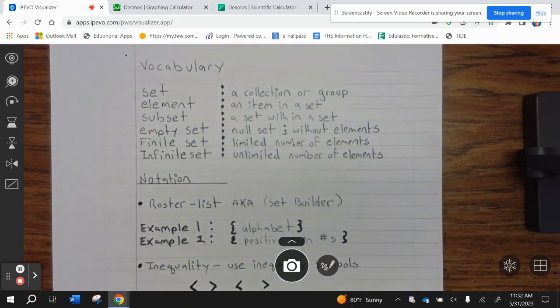Let's take a look at some vocabulary. Set is a collection or group, element is an item in a set, a subset is a set within a set, an empty set is a null set without elements, finite set is a limited number of elements, infinite set is an unlimited number of elements.